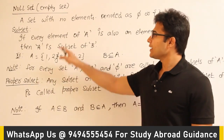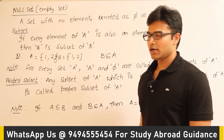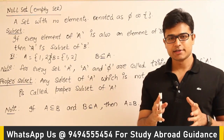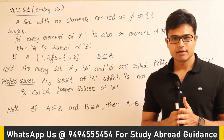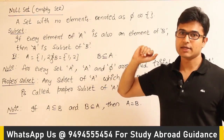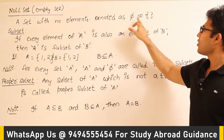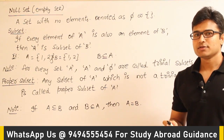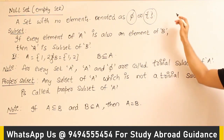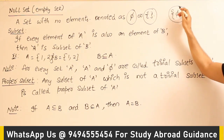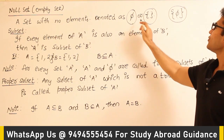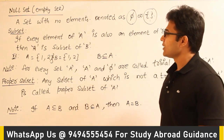A null set or empty set is a set with no elements. It is usually denoted as φ (phi) or with the empty set symbol. Be careful: don't use the notation {φ} to represent a null set — that is a set containing the element phi, which is wrong. Use either φ or the empty set notation to represent a null set.